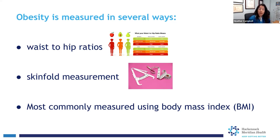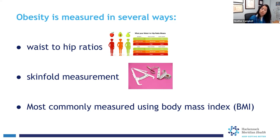The waist-to-hip ratio essentially measures your waist size at its smallest point divided by your hip size at the largest point. That ratio, should it be greater than one, poses a higher risk of cardiovascular disease.